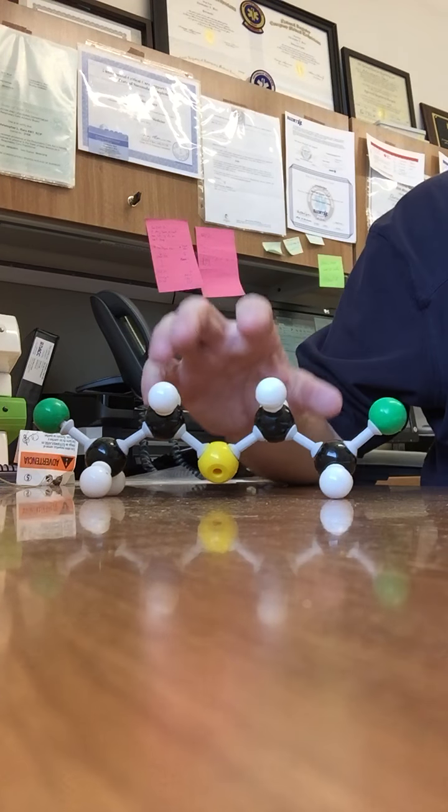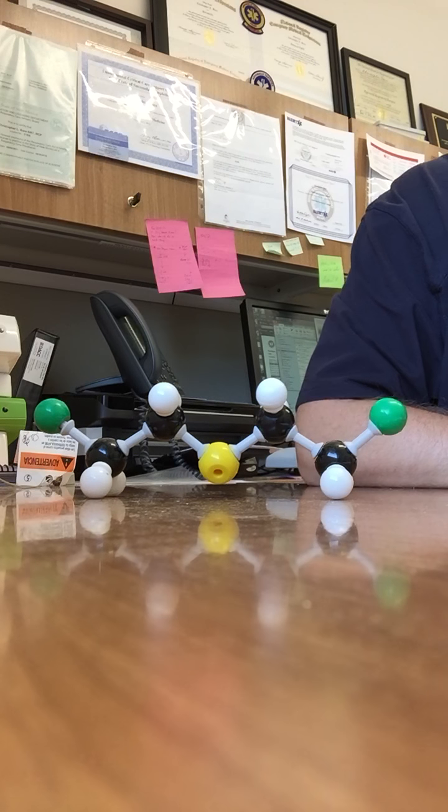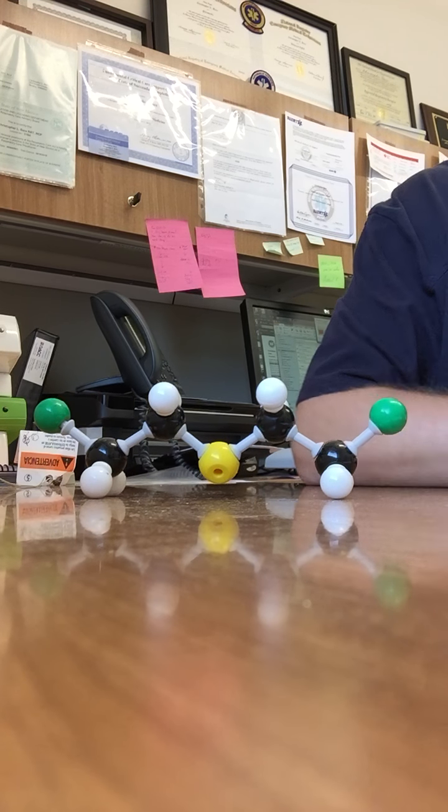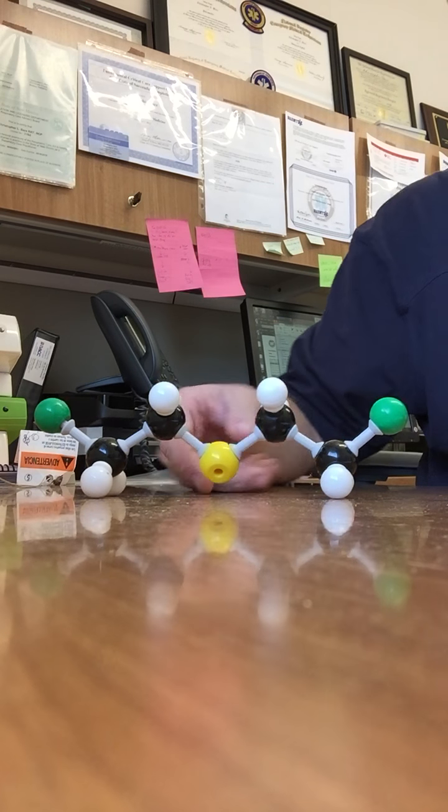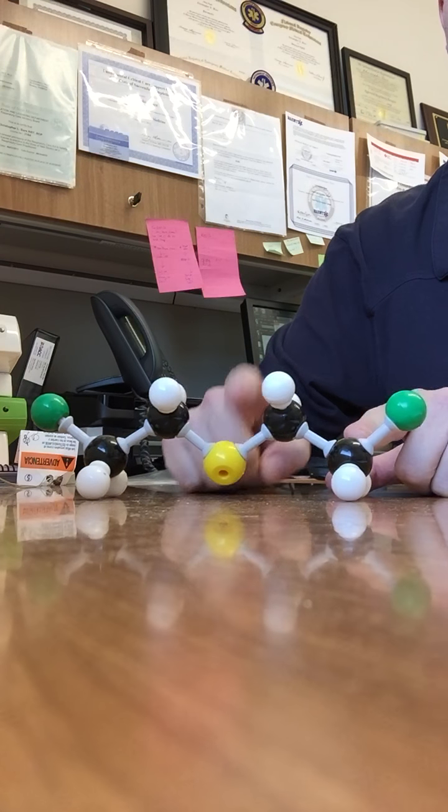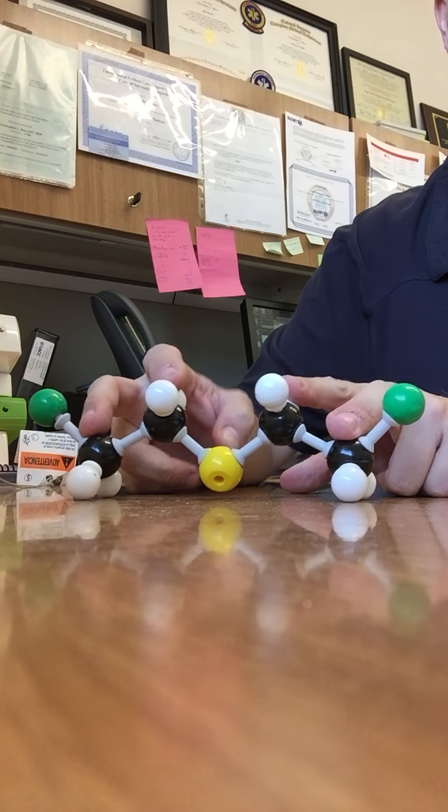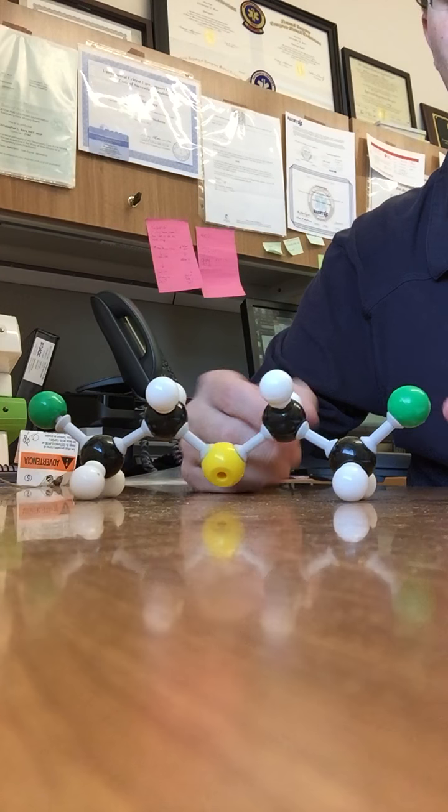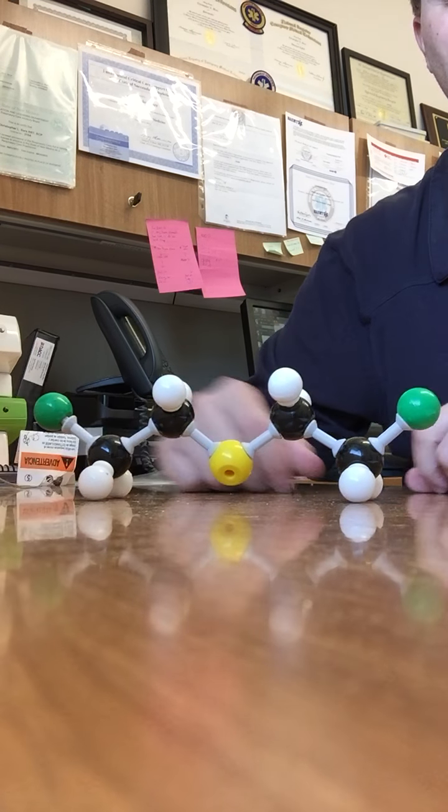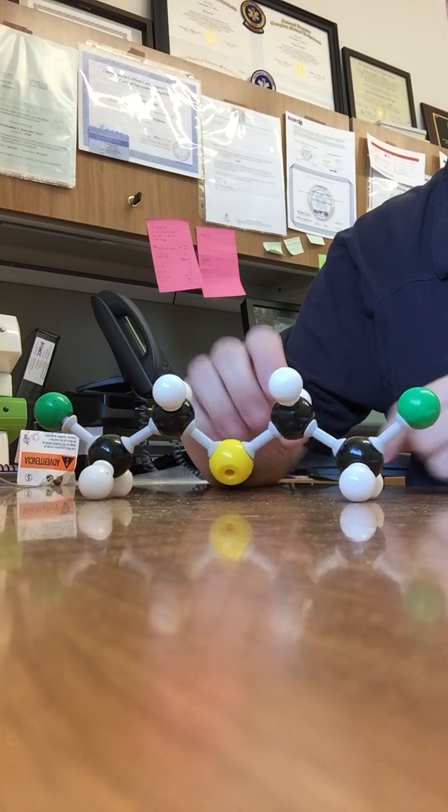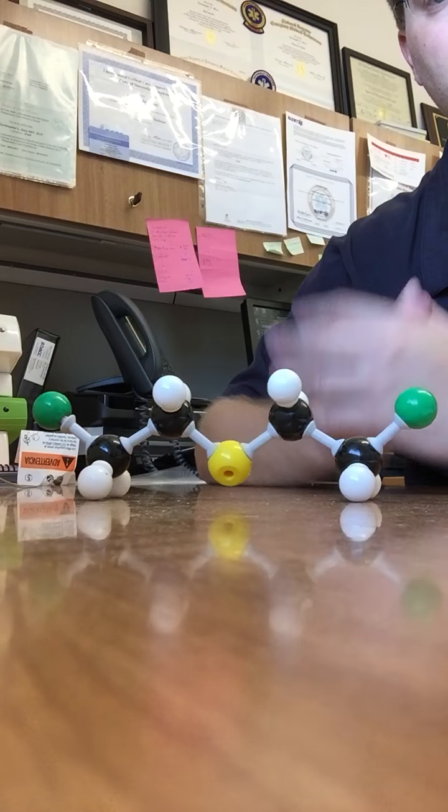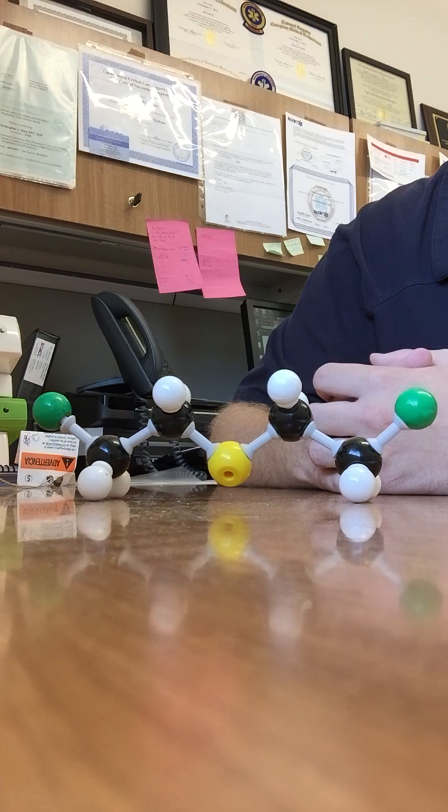Of which I have a molecular model of the prototypical vesicant. This is what's known as a sulfur mustard. So you have a sulfur atom and you have two ethyl groups here, which are two carbons. Two ethyl groups, and then you have chlorine atoms sticking off the end of these carbons here. And this makes up the fundamental structure of most of your vesicants.